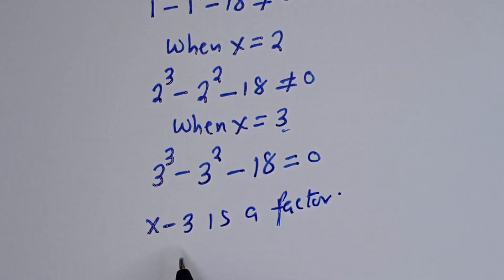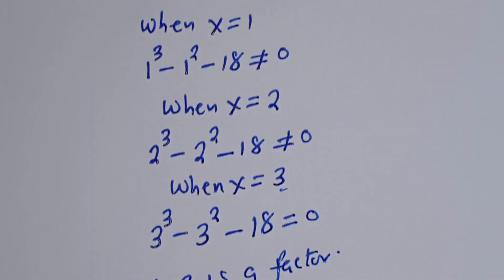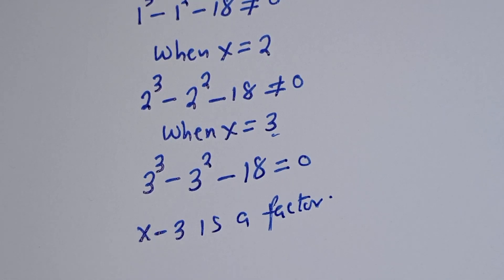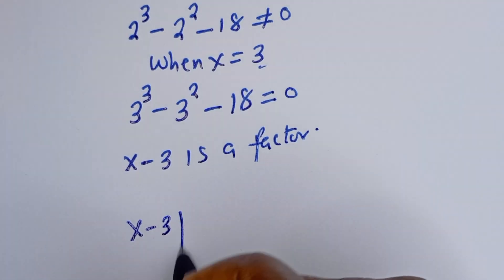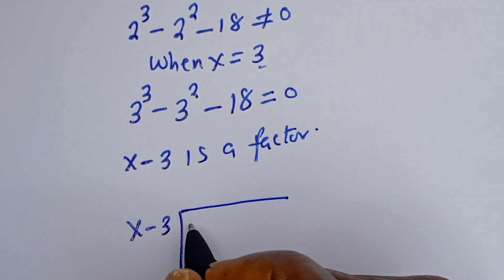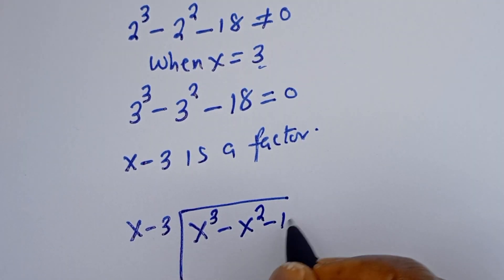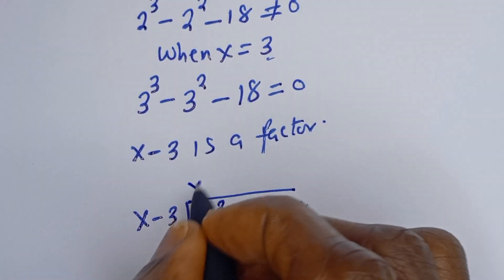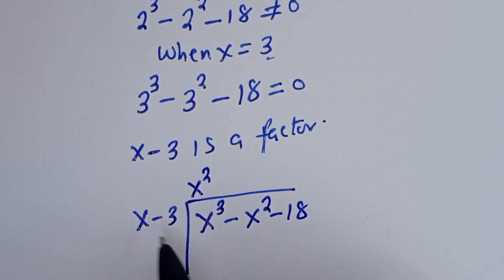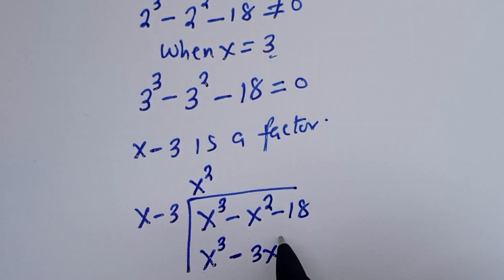In order to get the other factor, which is a quadratic, let's divide this equation — that is s cubed minus s squared minus 18 — by (s minus 3) using the long division method. We have (s minus 3) dividing into s cubed minus s squared minus 18. s goes into s cubed giving s squared. s squared times s is s cubed, and s squared times minus 3 is minus 3s squared.